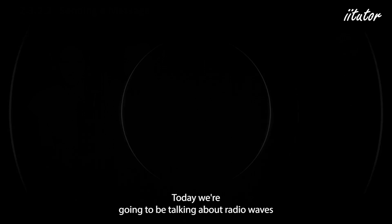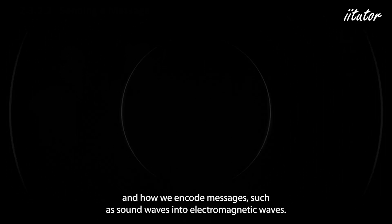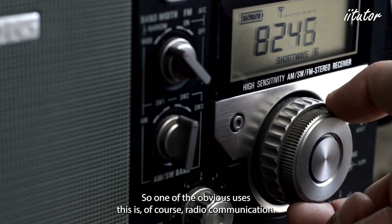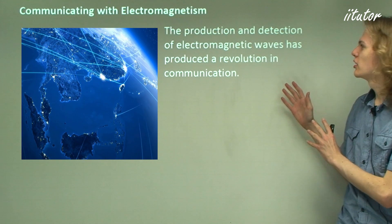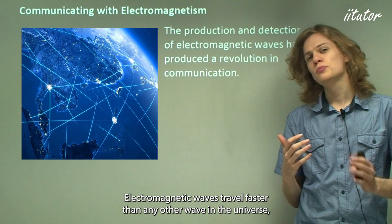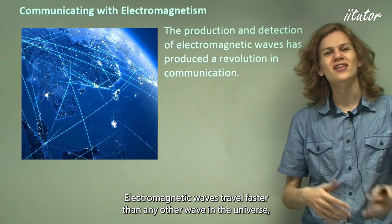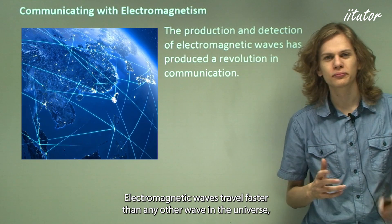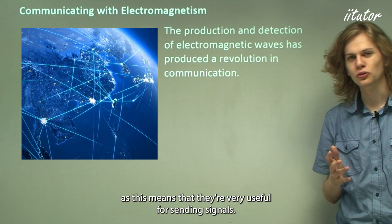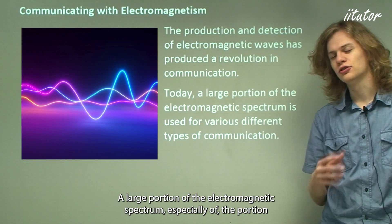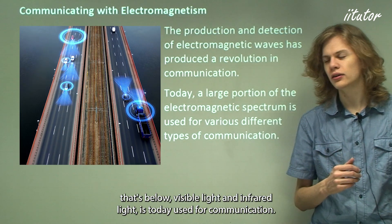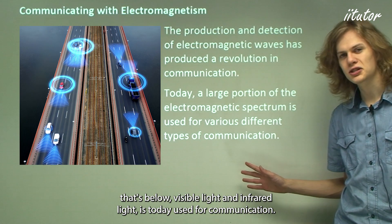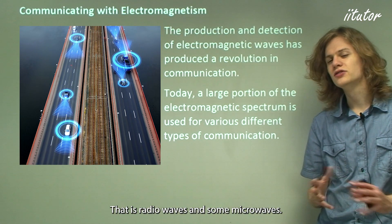Today we're going to be talking about radio waves and how we encode messages such as sound waves into electromagnetic waves. One of the obvious uses of this is radio communication. The production and detection of electromagnetic waves has produced a revolution in communication. Electromagnetic waves travel faster than any other wave in the universe, making them very useful for sending signals. A large portion of the electromagnetic spectrum, especially below visible and infrared light, is used for communication — that is, radio waves and some microwaves.